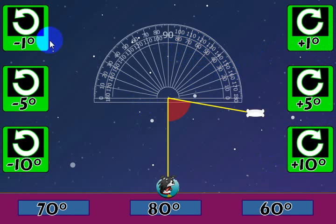These buttons here are the way you do it, as well as these. These buttons here will move you clockwise, and these buttons will move the protractor counter clockwise. This will move it in one degree increments, five degree increments, and ten degree increments.